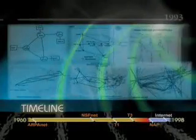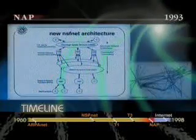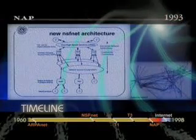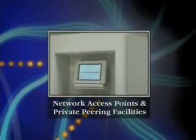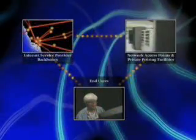From the wider and faster T3 backbone and network access points (NAP) architectures to the commercial internet connecting millions of computers together through complex networks in over 100 countries, today's internet is comprised of a mesh of internet service providers, backbone networks, network access points, private peering sites where ISPs exchange traffic, and end-user facilities.